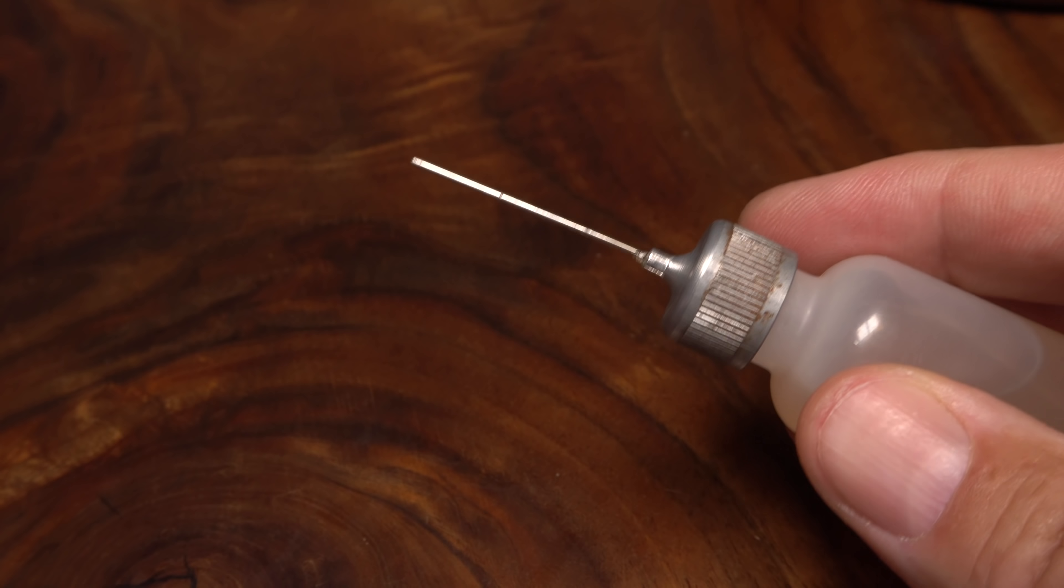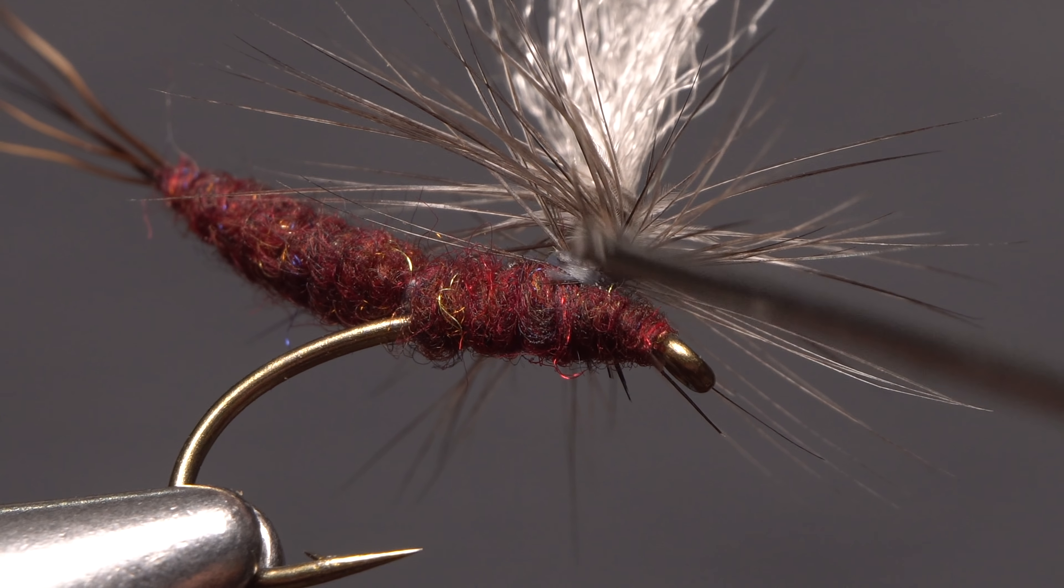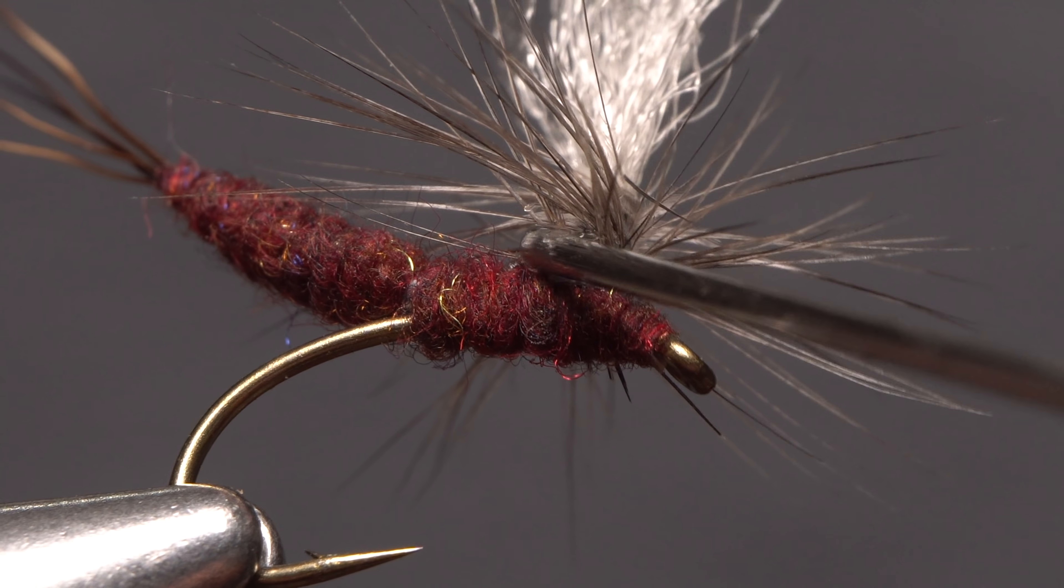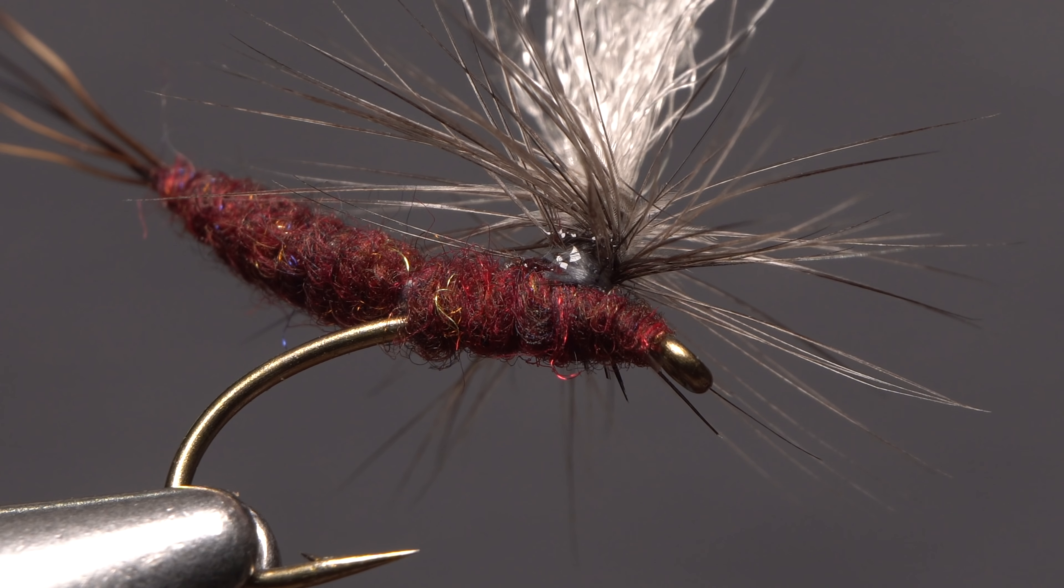It's a really good idea to add a drop of head cement to the thread wraps at the base of the post. Once it dries and contracts, it will greatly increase the fly's durability.